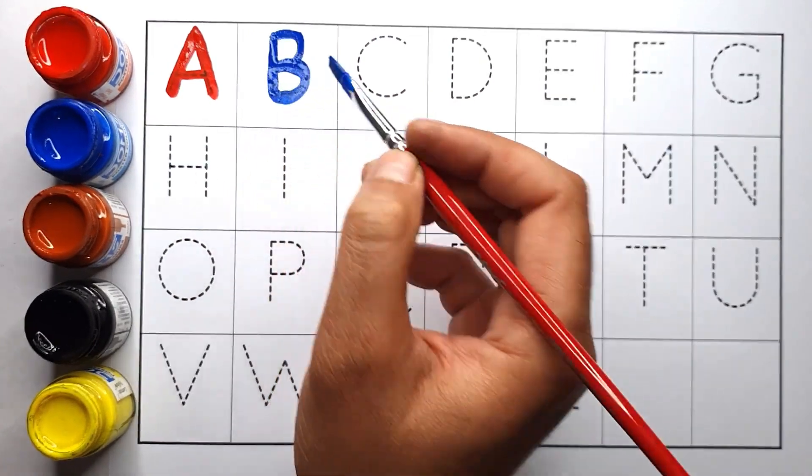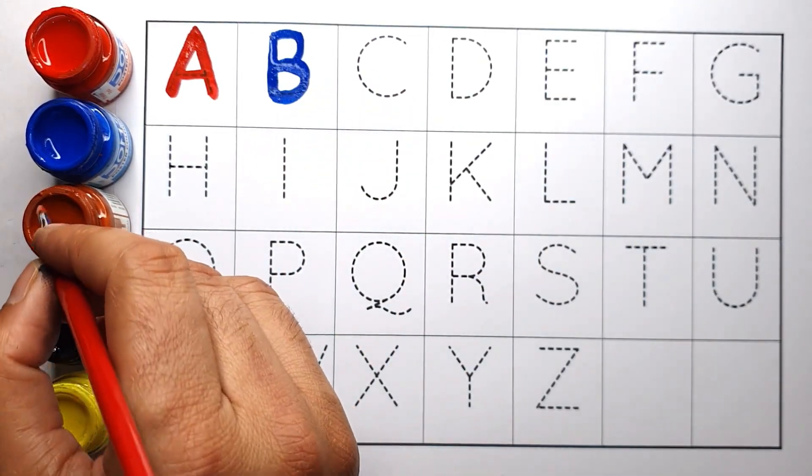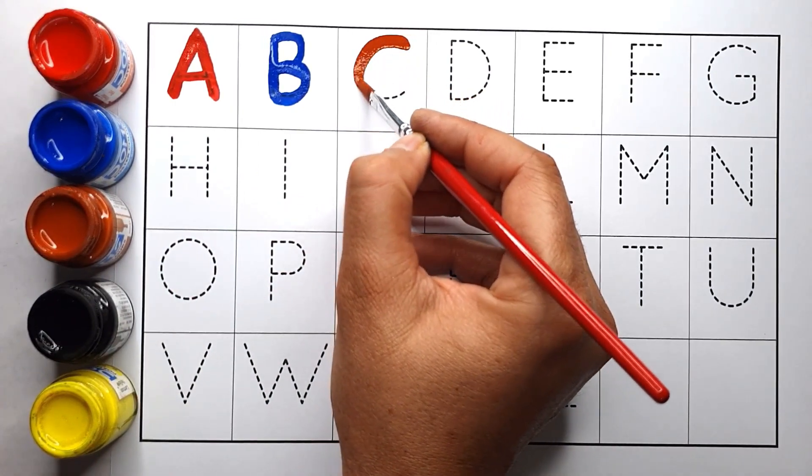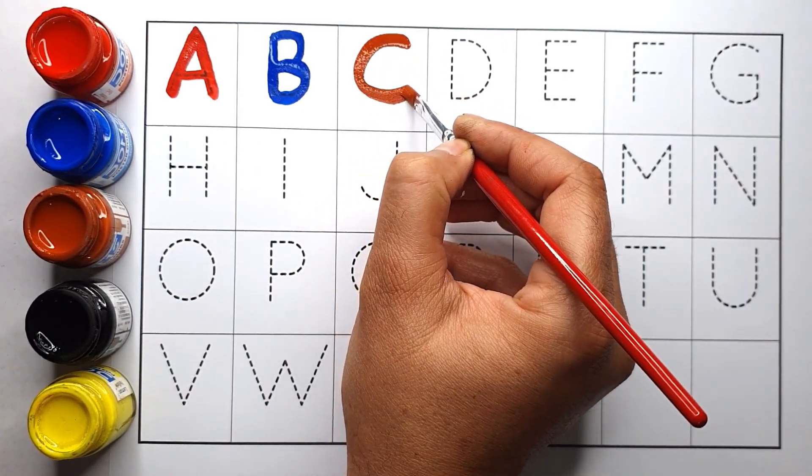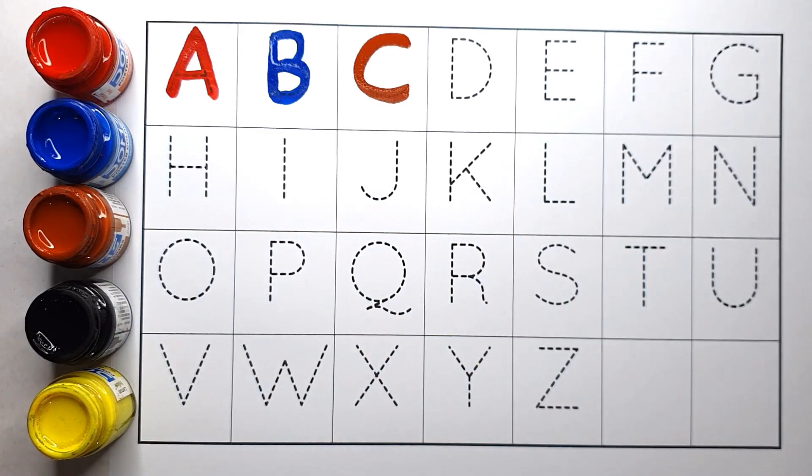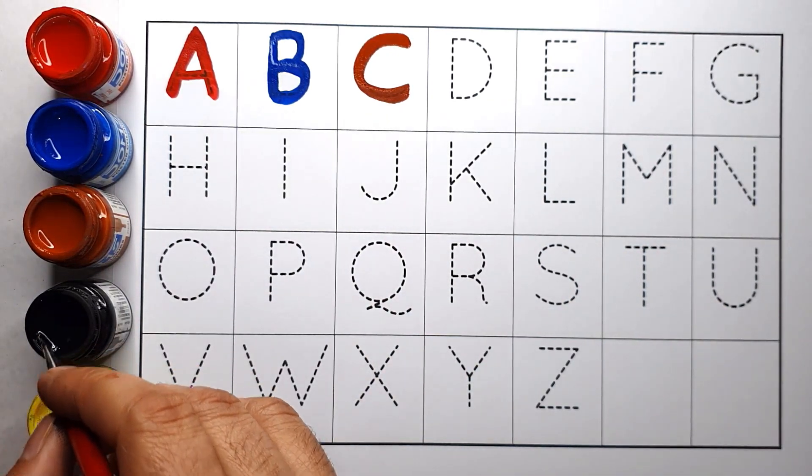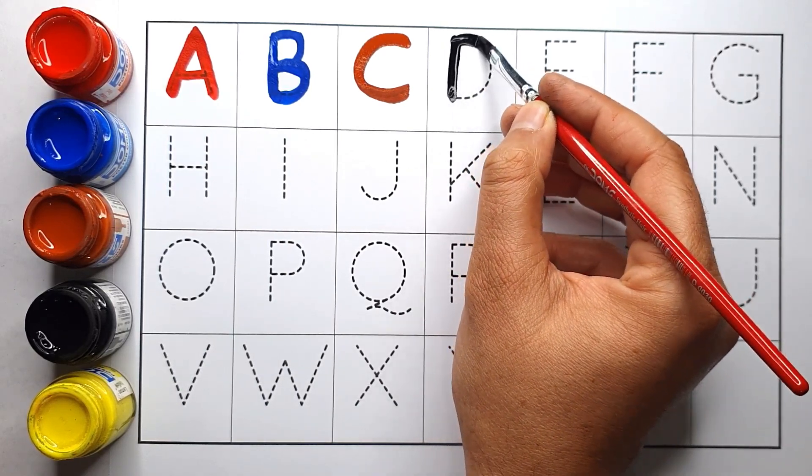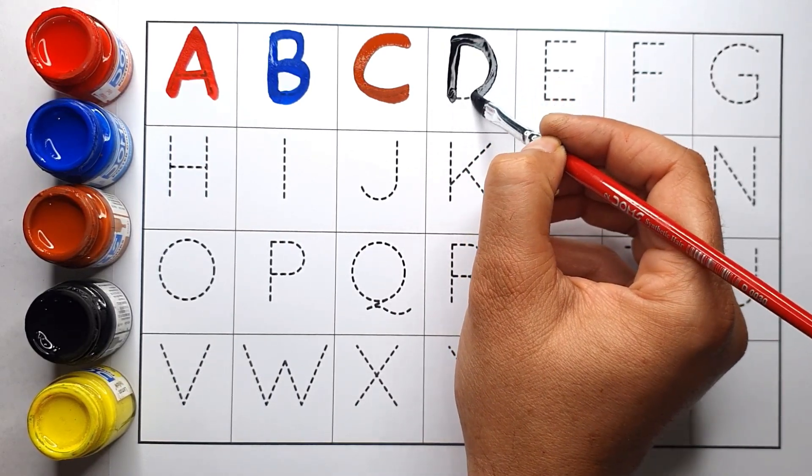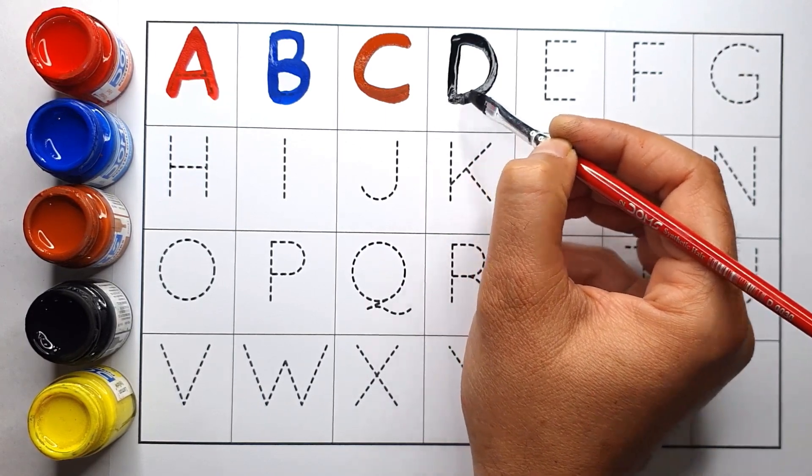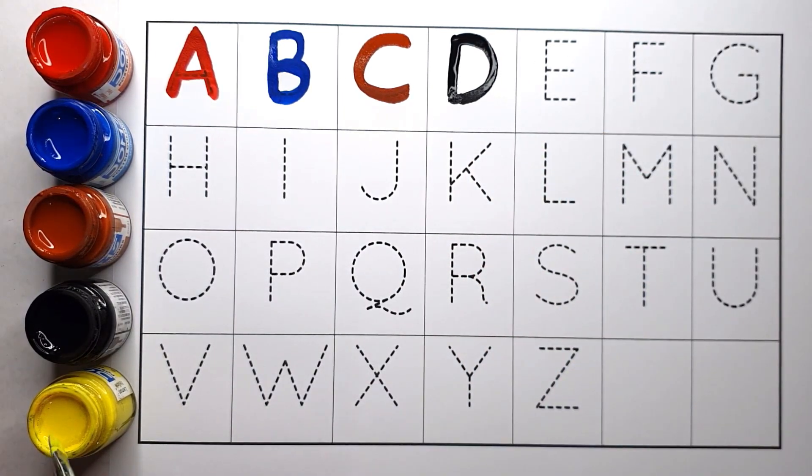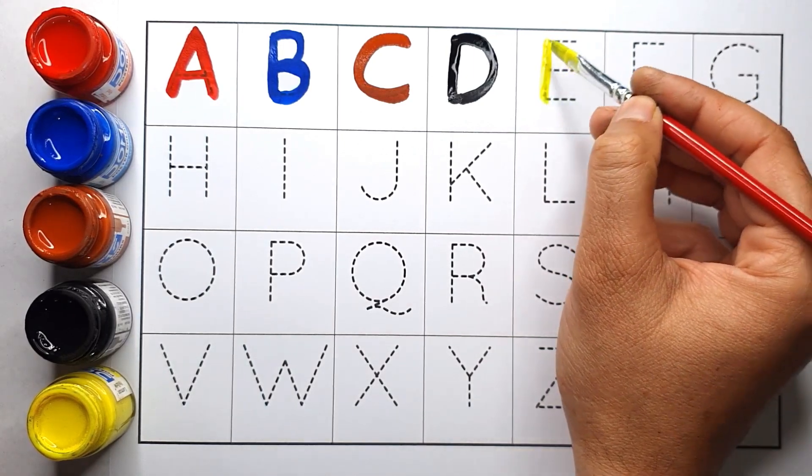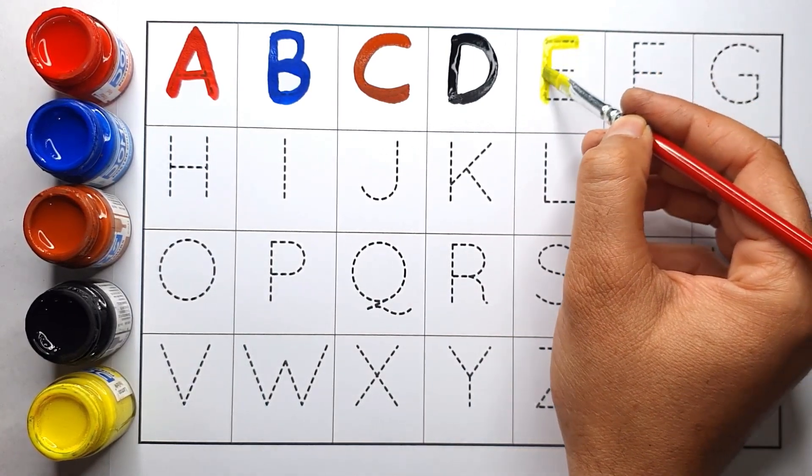Brown colour C. C for cat. Black colour D. D for dog. Yellow colour E. E for elephant.